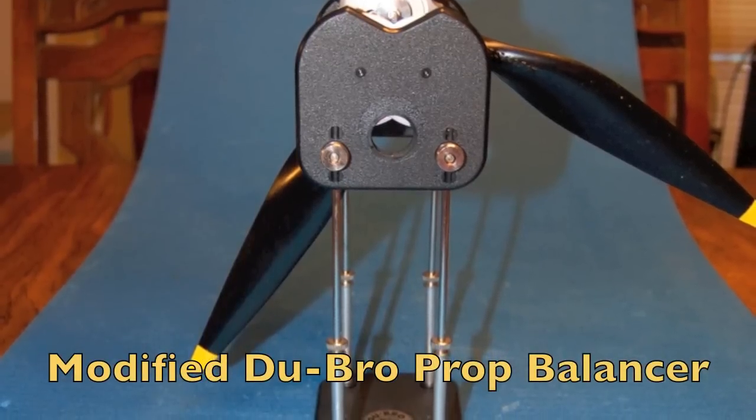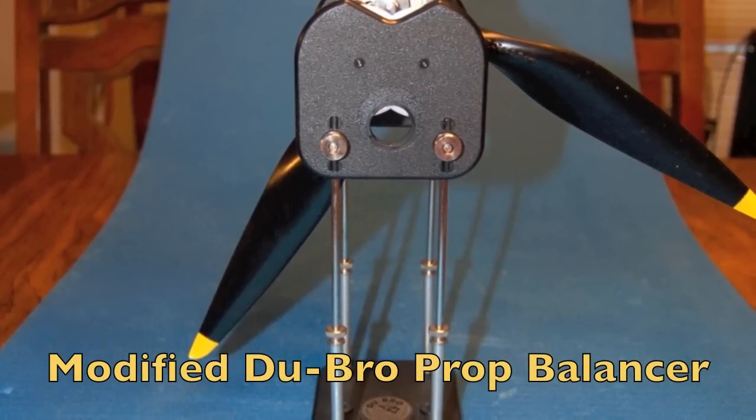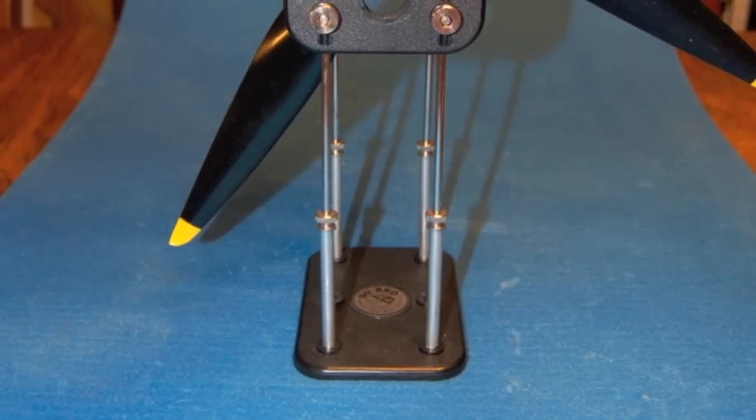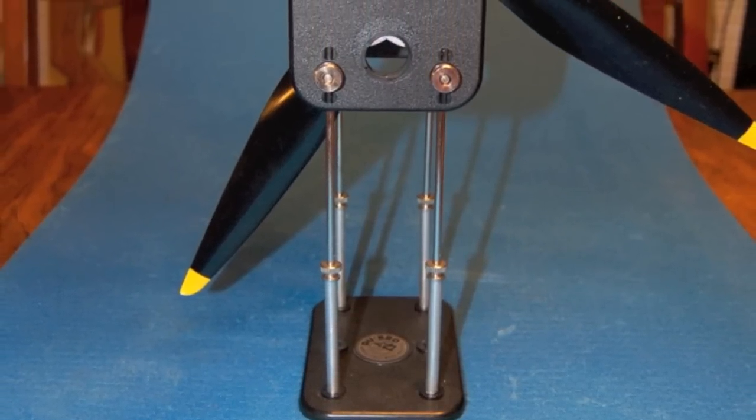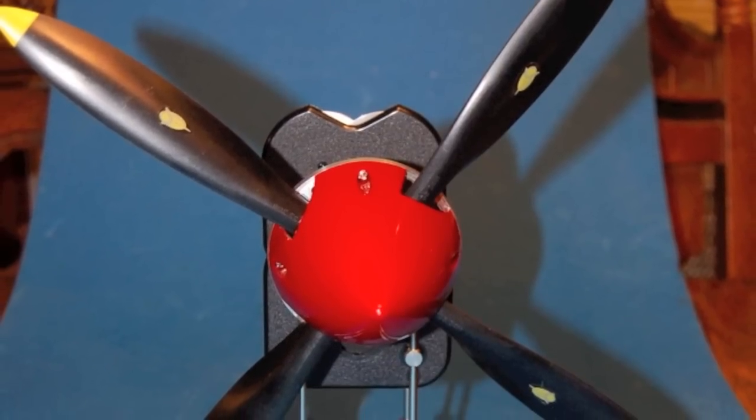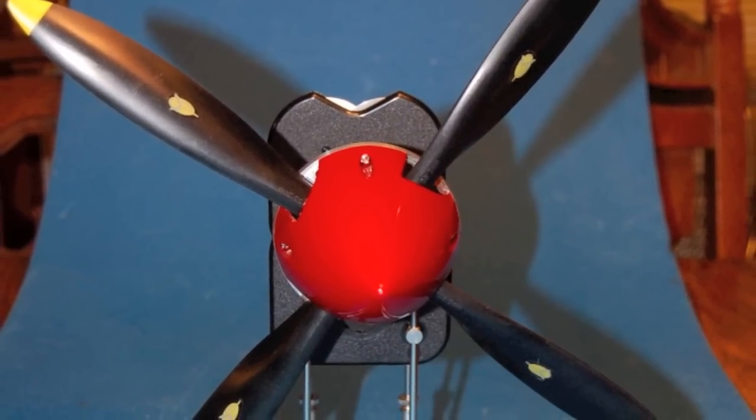This is my modified Dubrow prop balancer. What I have on here is the 18 inch varial prop. And this is with the 14 inch varial prop.